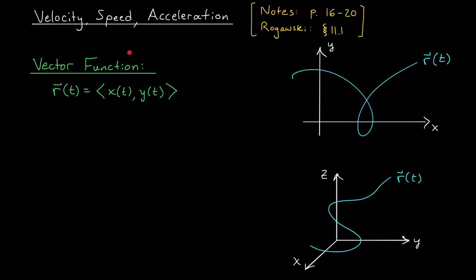As a reminder, we've been working with these vector functions, r of t. They take in a single scalar input called a parameter and spit out an entire vector of outputs. If the output vector has two components, r of t traces some curve in R2. If it has three components, it traces some curve in R3.